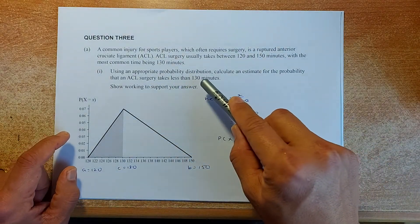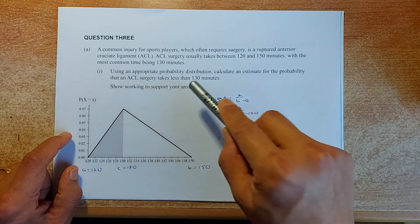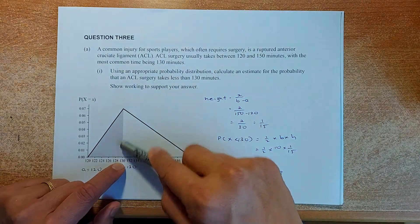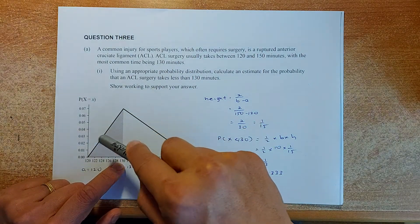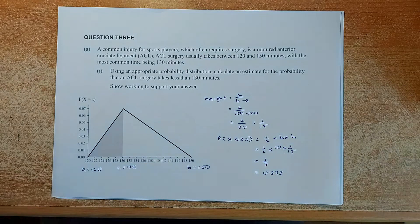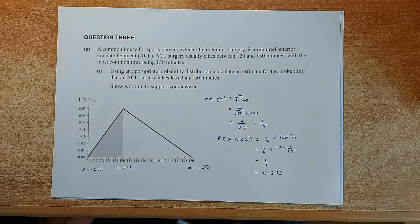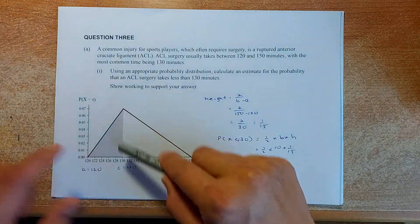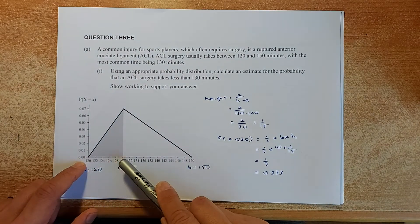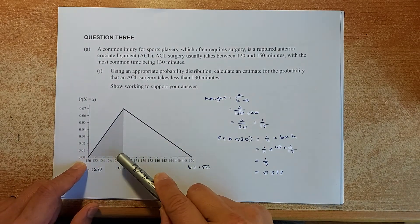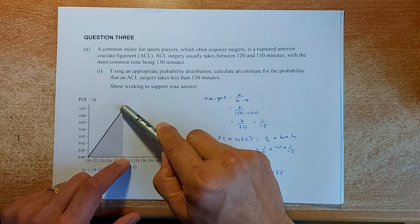Using the appropriate distribution, calculate the probability that the ACL surgery takes less than 130. So we are calculating the area of this triangle. To do that, we know to calculate the area of a triangle, you need base and height. The base is simple: 130 minus 120 is 10. We need to find the height using the formula in the formula booklet.